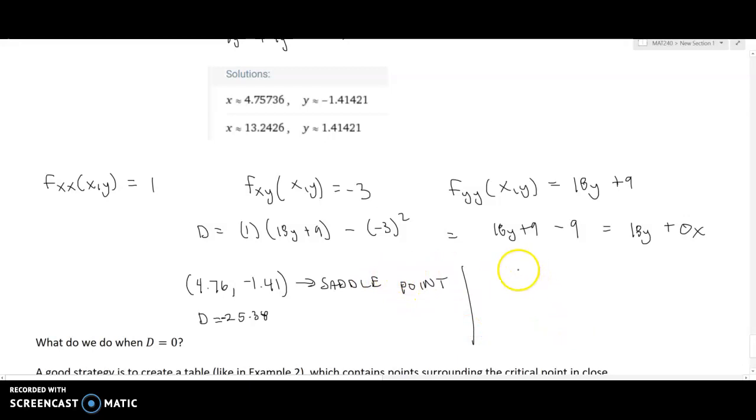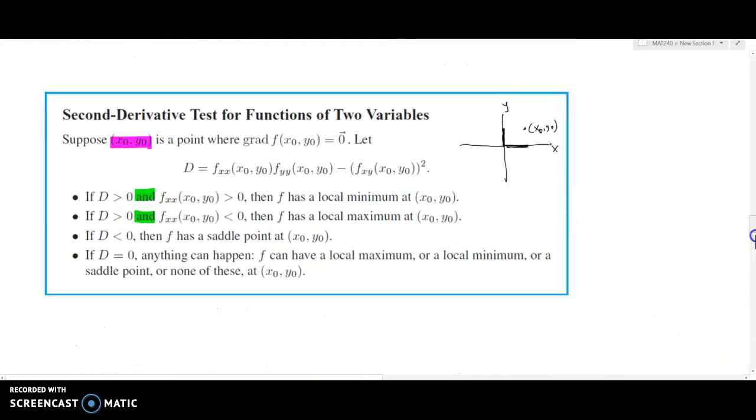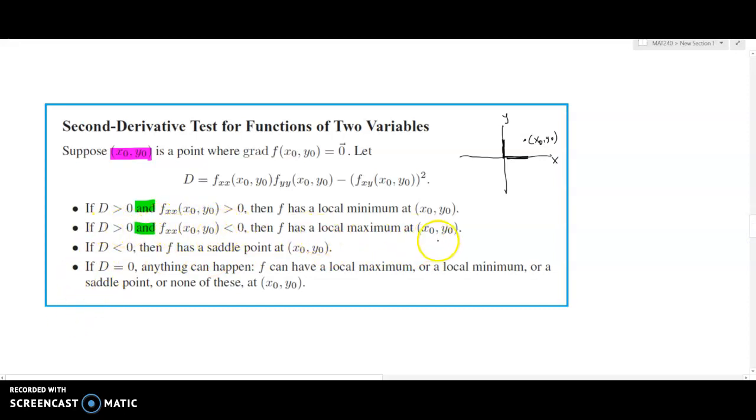But we still have one more point to classify. We now need to look at the point 13.24, 1.41. And if I go ahead and plug in 1.41 for y and 13.24 for x, I'm going to get the same but opposite value, 25.38. And this is bigger than 0. So then I need to look at the constraint is if D is bigger than 0, you also need to look at the second partial with respect to x, which is always equal to 1. So it's totally safe to say that at 13.24, 1.41, and actually at every single point, the output of this mixed partial right here is going to be negative 3. It doesn't matter the location. And so we see that D is bigger than 0. f_xx at our critical point is less than 0. And so the conclusion that we can draw from that is, going back up to our table, D is bigger than 0, and f_xx is less than 0, so that's a local maximum.